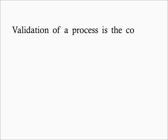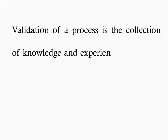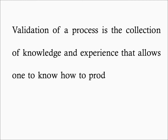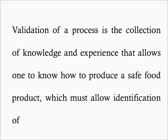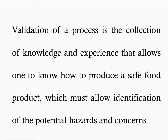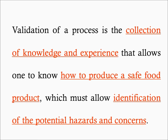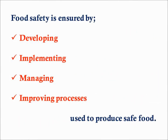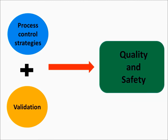Before moving on, it is appropriate to establish some definitions. Validation of a process is the collection of knowledge and experience that allows one to know how to produce a safe food product, which must allow identification of the potential hazards and concerns. It must also provide the tools and metrics for monitoring and controlling these hazards. As a result, food safety is ensured by developing, implementing, managing, and improving processes used to produce safe food. Process control strategies and validation are critical to build both quality and safety attributes into food processes and products.